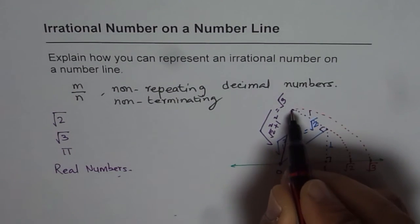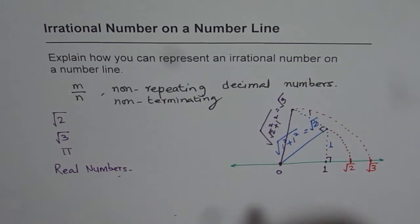Line segment which is equal to our second right triangle, do you see that? So that is how we can actually represent all the irrational numbers on the number line. And these are all real numbers. I hope you understand the concept.